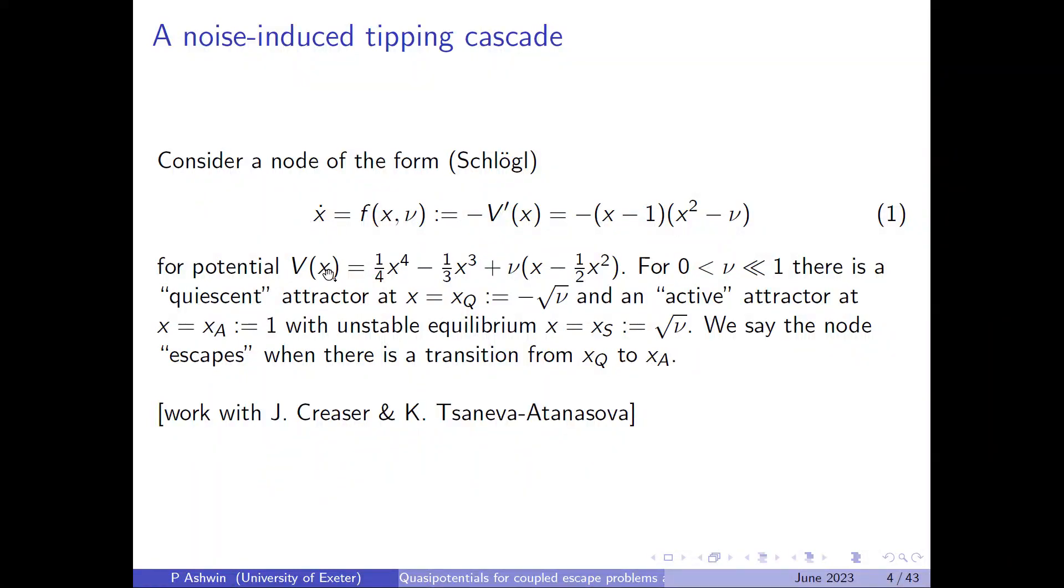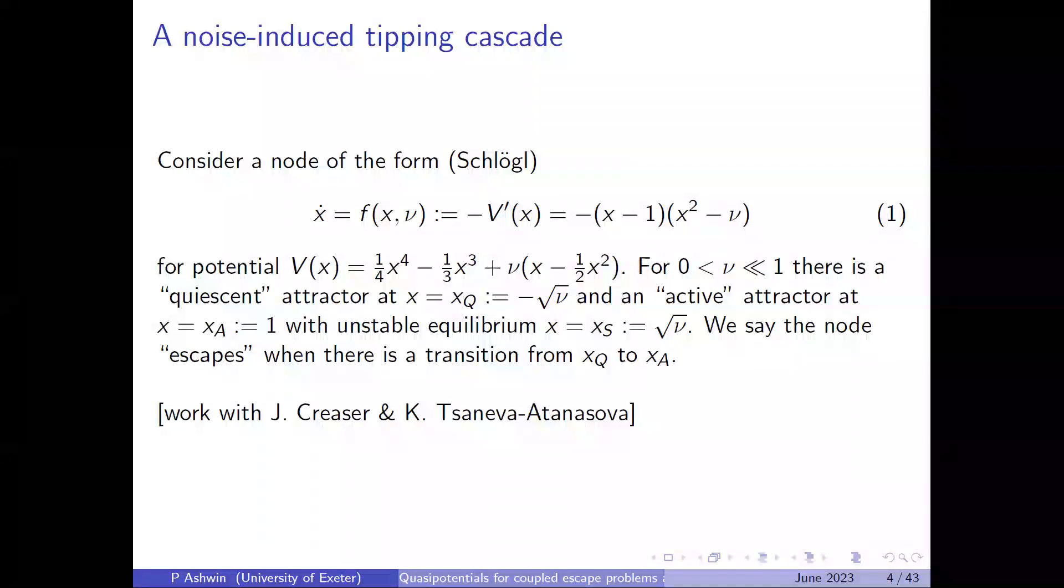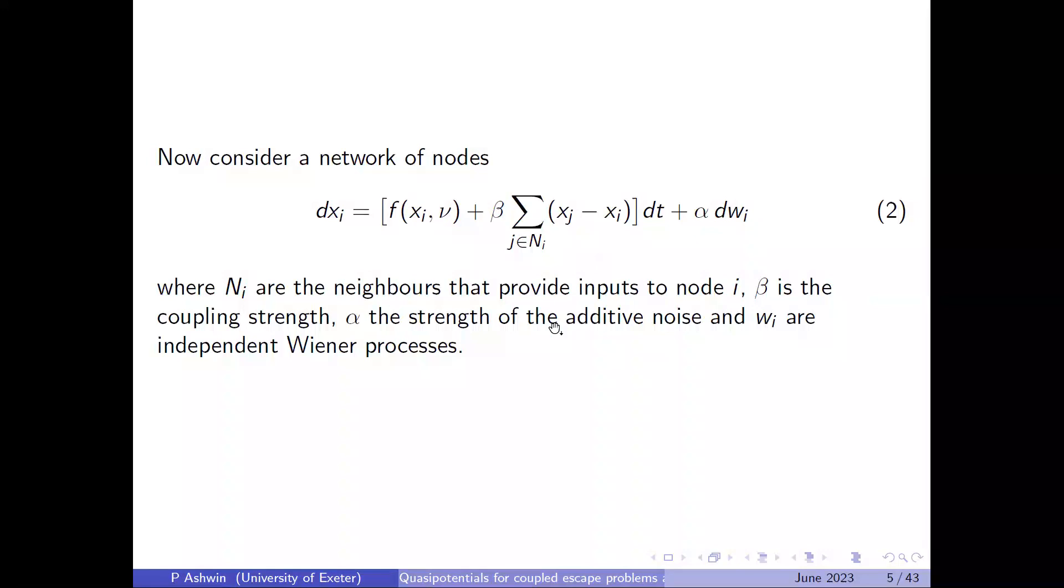Okay, so let's start with a particular model we were looking at, which is sometimes called a Schlögel model. But it's a polynomial one dimensional system. And you can see there are roots at one and a plus or minus root nu. And what you have is you have a stable, what we call a quiescent attractor at xQ minus root nu. We have an active attractor at x is one. And then between the two of them, there is unstable equilibrium at plus root nu. So if I take nu very small, those two get closer and closer and there's like a saddle node bifurcation when nu is zero. But if you look at the case where nu is small, we've got a definite quiescent attractor, but its basin of attraction is quite small and it's much more easy to escape from there to the active state than back. And we'll be using that in the analysis.